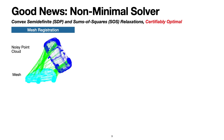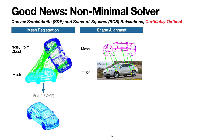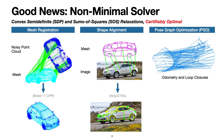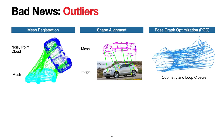I'll describe three examples. The first is mesh registration: given a 3D mesh model and a noisy point cloud with correct correspondences, the non-minimal solver proposed by Brialis can find the globally optimal alignment. The second is shape alignment: given a 3D mesh model and a 2D image with 2D-to-3D correspondences, the solver in this paper finds the globally optimal camera pose. The third is pose graph optimization in SLAM: given noisy odometry and loop closure measurements, SESYNC can compute the globally optimal pose graph.